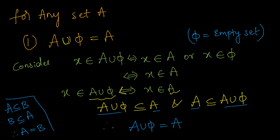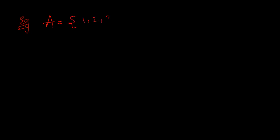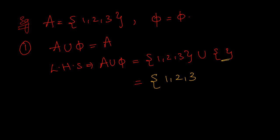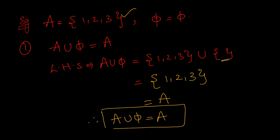Let us see an example. Let A = {1, 2, 3} and φ be the empty set. We need to check whether A union φ equals A. Taking the left hand side: A union φ = {1, 2, 3} union {} . Union means combining all elements from both sets. Since the empty set has no elements, we get {1, 2, 3}, which is our set A. Therefore A union φ = A. This law is known as the identity law.